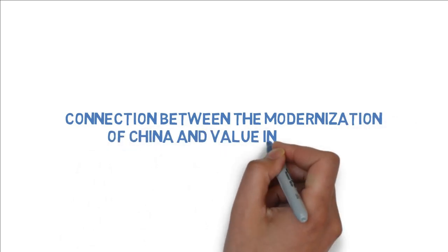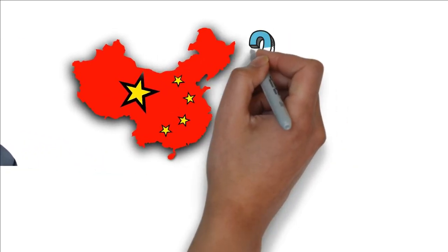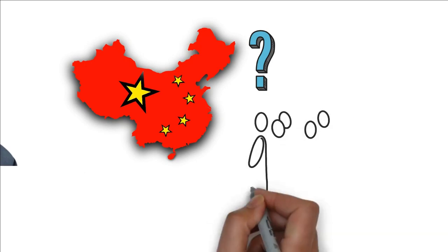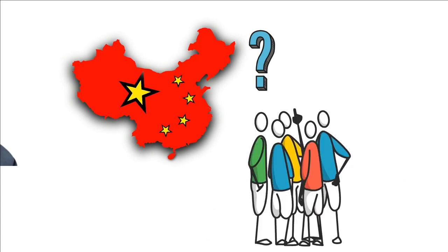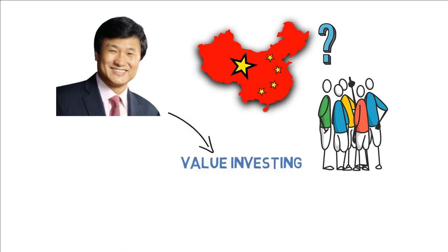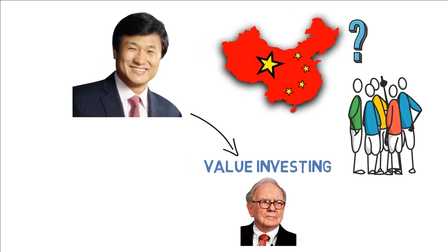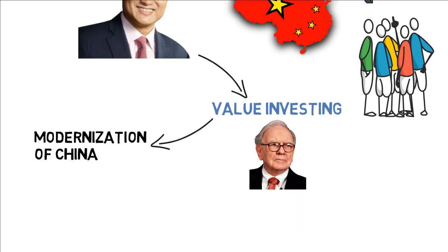First, we will look at the connection between the modernization of China and value investing. Li Lu has been obsessed with the modernization of China since he was a teenager. He has always wanted to understand why the country's modernization process has been so difficult. In fact, over the past 200 years, Chinese and foreign intellectuals have also tried to understand this great puzzle. Value investing is another interesting topic that he stumbled upon after coming to the United States and hearing one of Warren Buffett's speeches by accident.